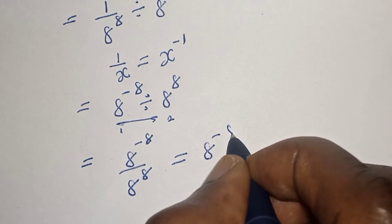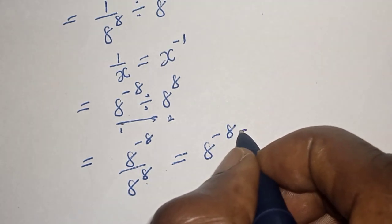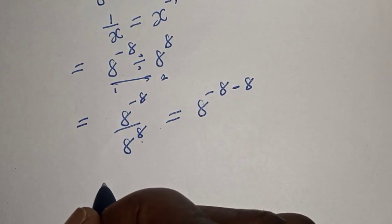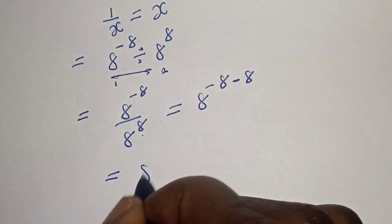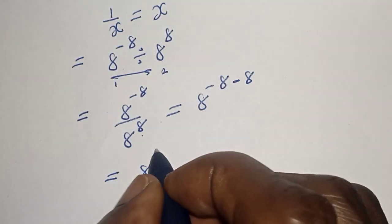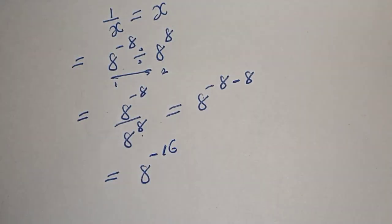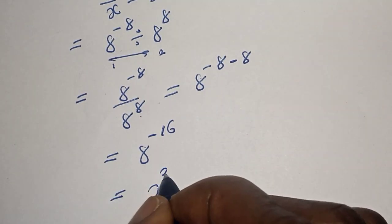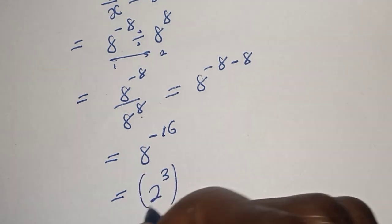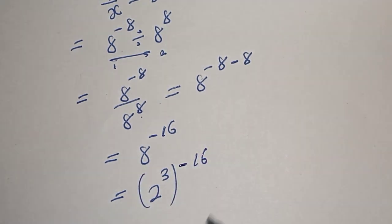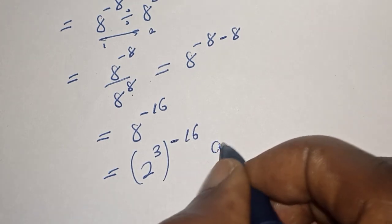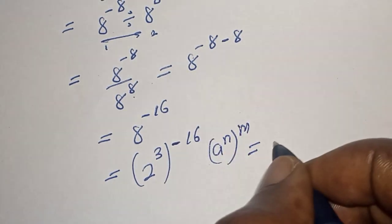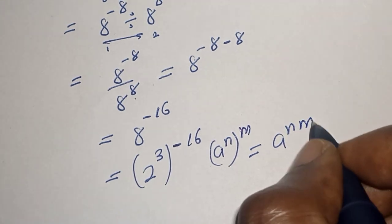This is equal to 8 raised to power minus 8, raised to power 3, to the power of minus 16. Take note of this rule: a raised to power n, to the power of m, is equal to a raised to power n times m.